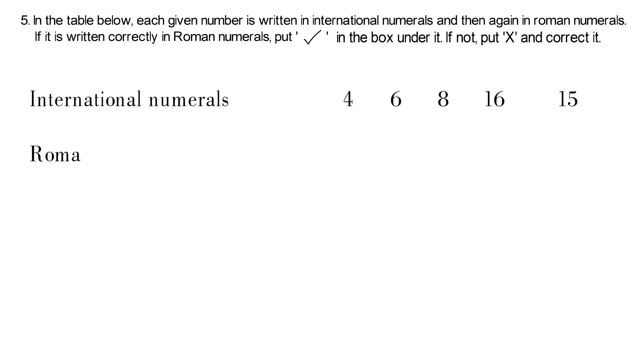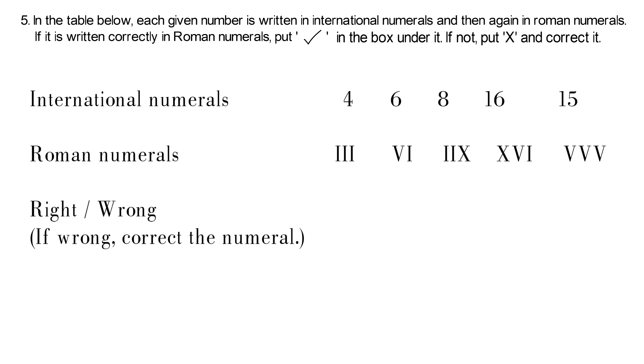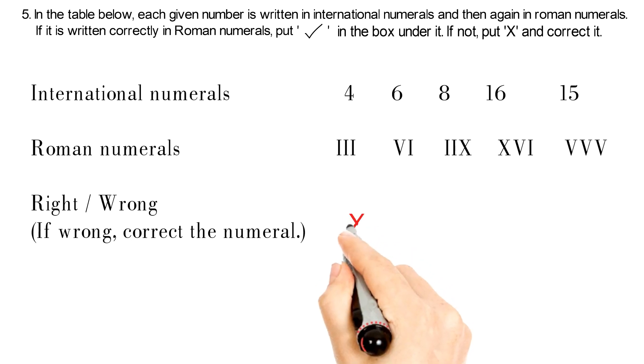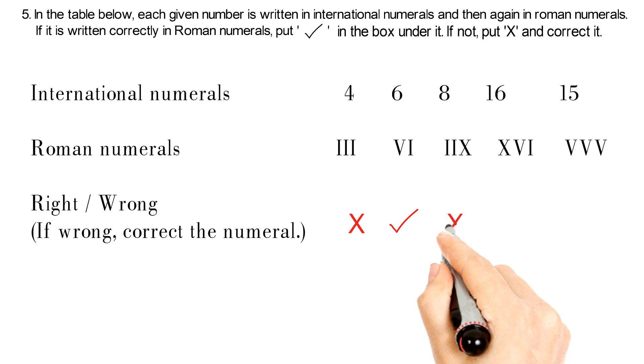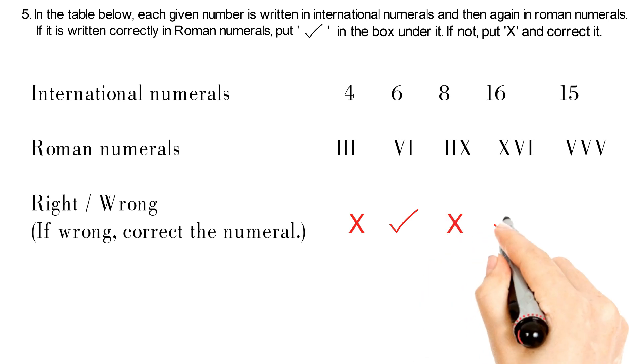International Numerals, Roman Numerals, Right or Wrong. First have 4, Wrong. 6, Right. 8, Wrong. 16, Right. 15, Wrong.